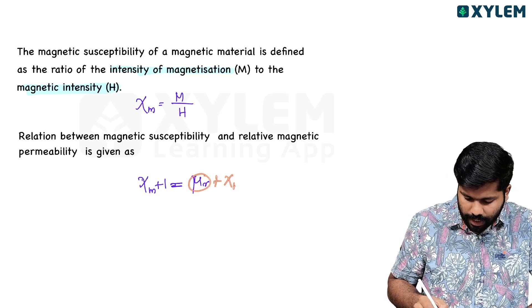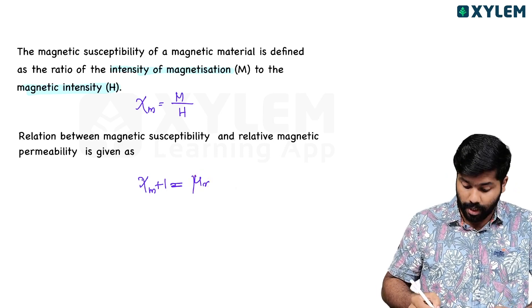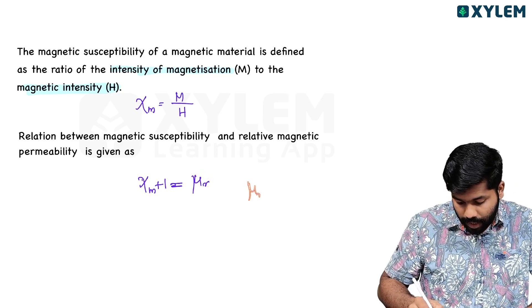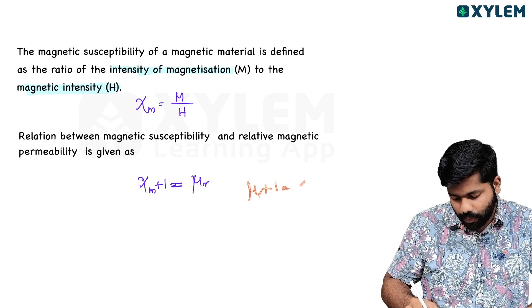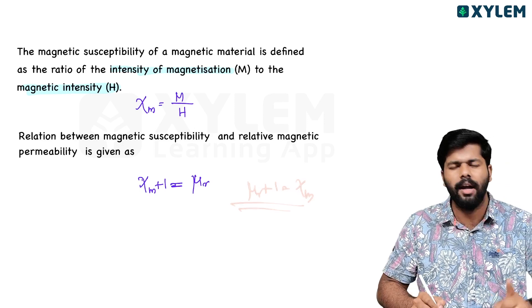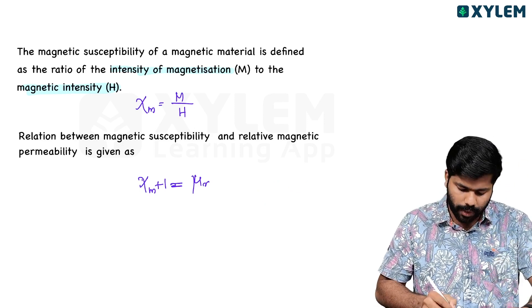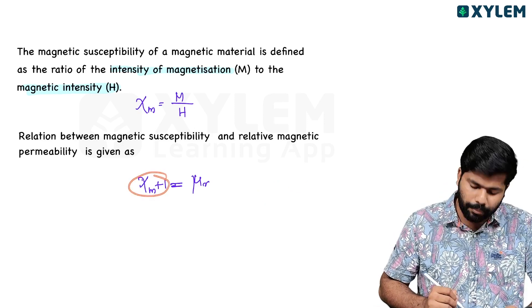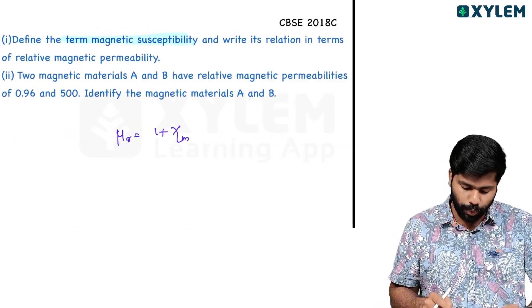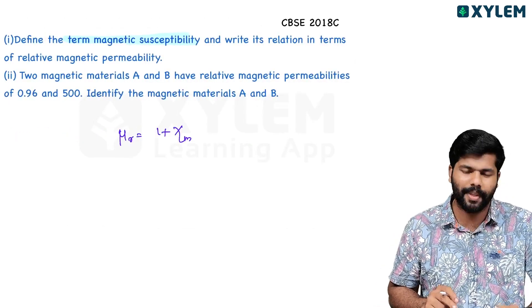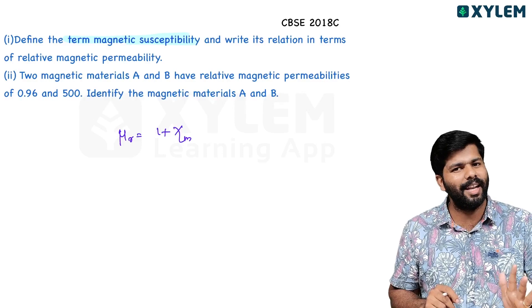The relation between magnetic susceptibility and relative permeability is: χm + 1 = μr.